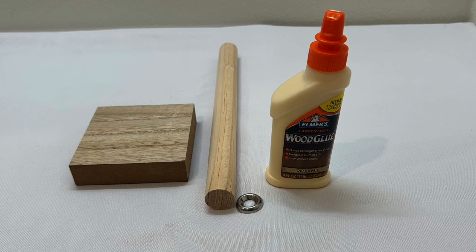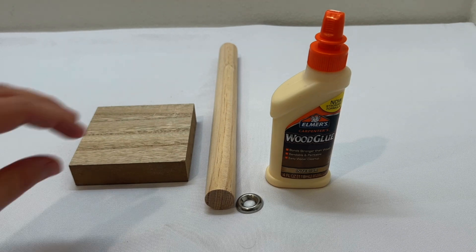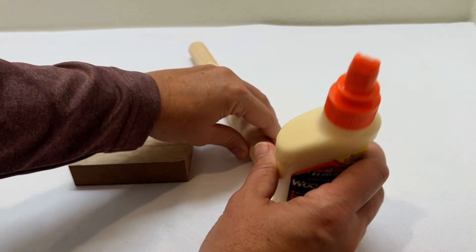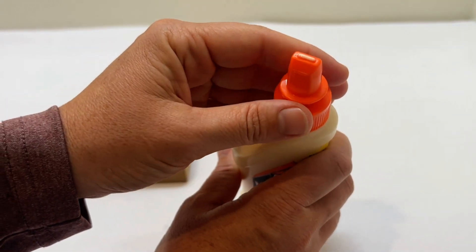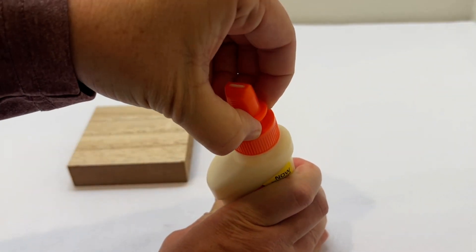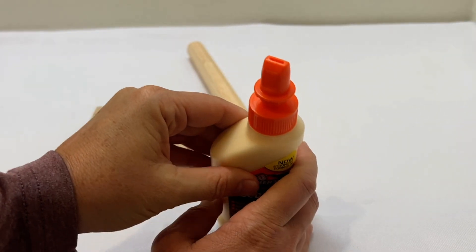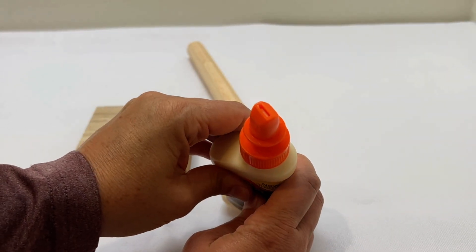The first step is to put the finishing washer on top of the dowel rod. To do this, open your wood glue first and squeeze a little wood glue onto the surface.